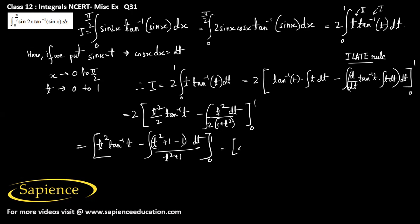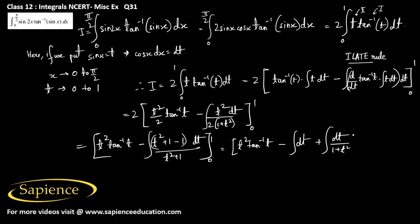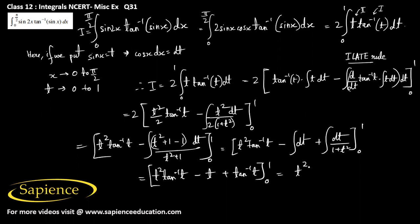This simplifies to: t²·tan⁻¹(t) − t + tan⁻¹(t), from 0 to 1. We can combine the tan⁻¹(t) terms to write it as (t²+1)·tan⁻¹(t) − t, evaluated from 0 to 1.